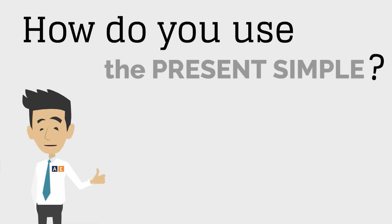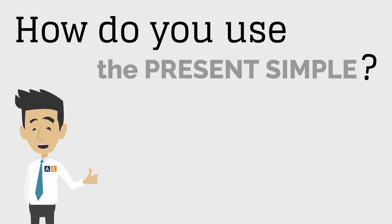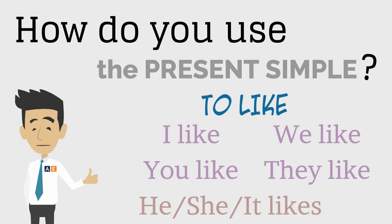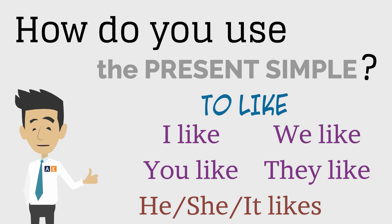And how do you use the present simple? For the verb "to like," write: I like, you like, he, she, it likes, we like, they like.